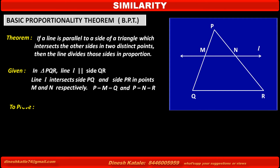Now, see what we have to prove in this theorem. Line L is parallel to side QR of triangle PQR, and we have to prove that it divides the other two sides — side PQ and PR — in the same ratio, in the same proportion. That is, we have to prove that PM upon MQ is equal to PN upon NR.